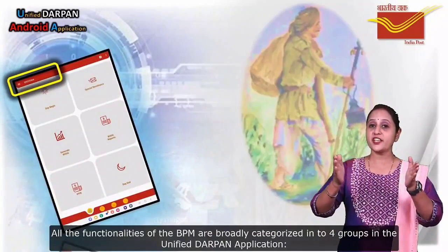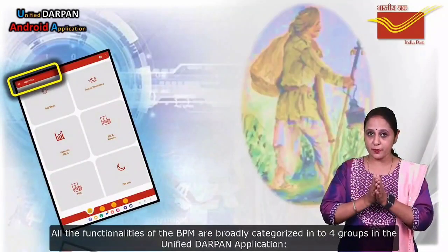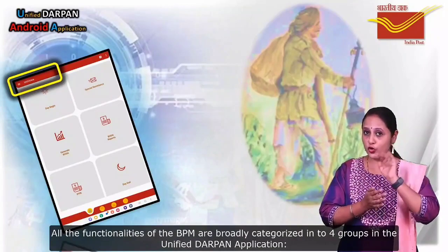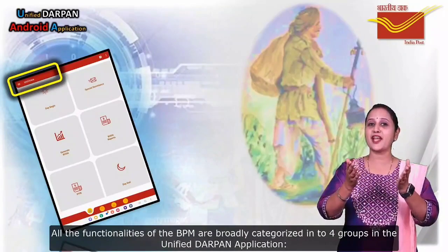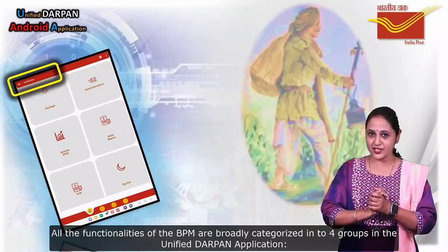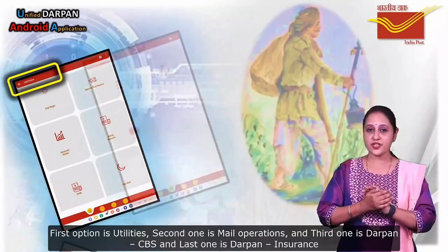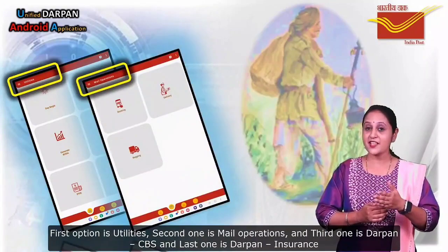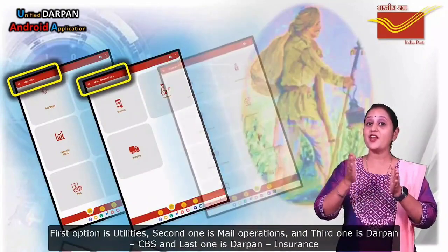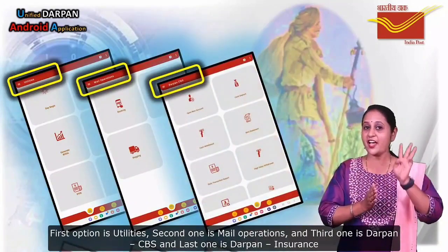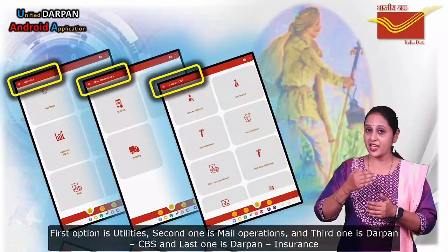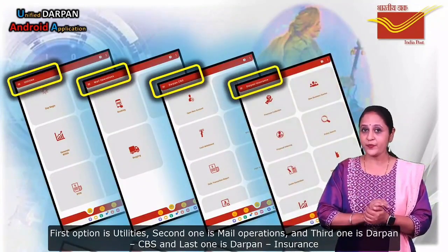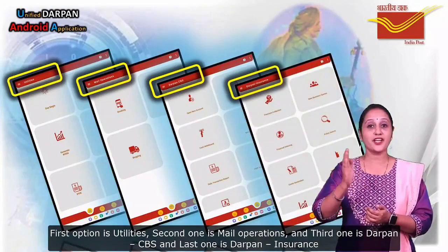All the functionalities of the BPM are broadly categorized into four groups in the Unified DevPoint application. The first option is Utilities, the second one is Main Operations, the third one is DevPoint CBS, and the last one is DevPoint Insurance.